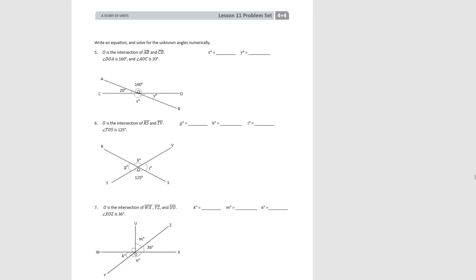Try number five. O is at the intersection of AB and CD. We know angle DOA is 160 degrees and angle AOC is 20 degrees. Based on what we know about intersecting lines, if one side is 20 degrees then Y also has to be 20 degrees, and if this side is 160 degrees then X also has to be 160 degrees. We also know that 160 degrees plus 20 degrees gives 180 degrees because AB is a straight line.